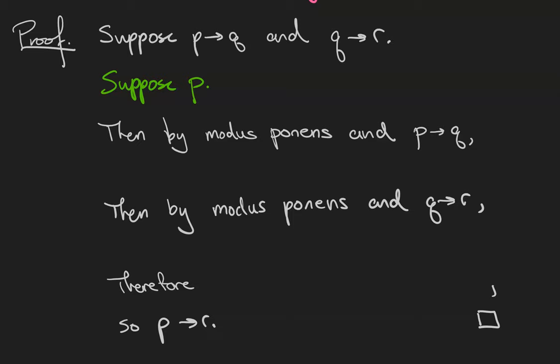Then, by modus ponens and the fact that if p then q is true, q is true. Then, also by modus ponens and the fact that if q is true then r must be true, you guessed it, r is true.